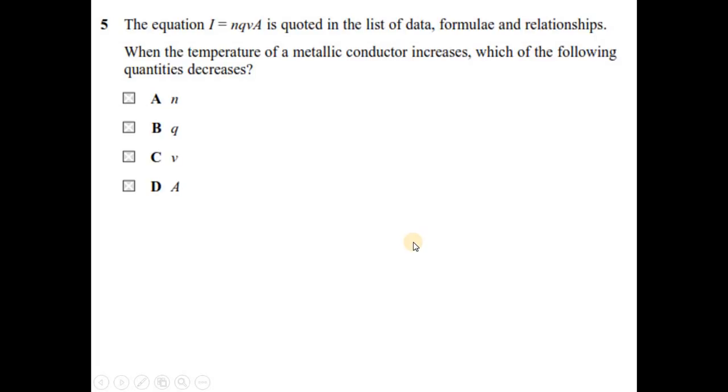Question number 5. The equation I equals NQVA is quoted in the data, formulas, and relationships. When the temperature of metallic conductor increases, which of the following quantities decreases? N is the charge density, number of electrons per unit volume. There is no effect of temperature on charge density, so N stays the same. Q is the amount of charge flowing, it cannot be changed. Area is the area of the conductor, temperature does not change the area. The only thing is because of temperature, resistance changes. That means the velocity is going to either decrease or increase. So your option is C.